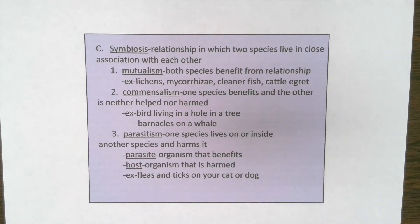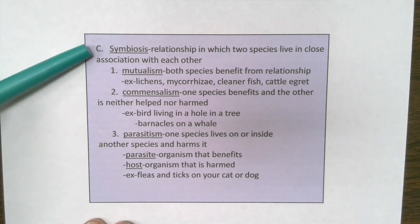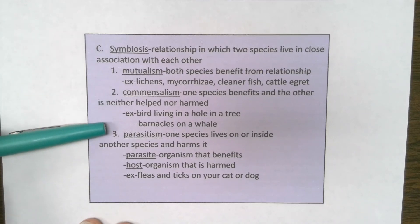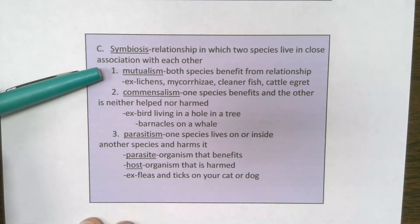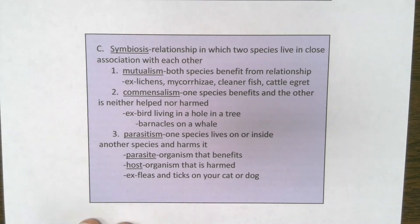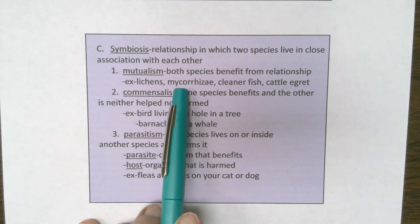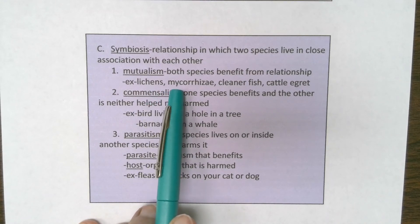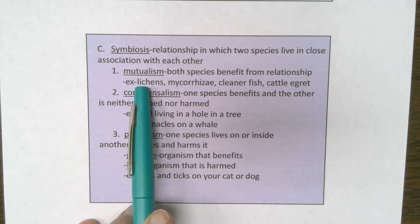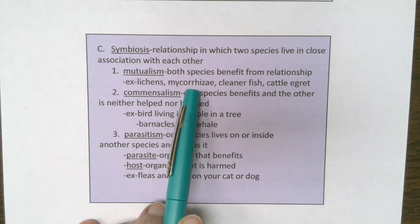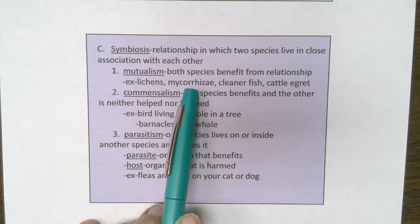The next community interactions: we've got competition, predation, and then symbiosis. Symbiotic relationships are relationships where two species live in close association with each other — a broad definition with three specific types. The first is mutualism, where both species benefit from the relationship. Lichens are an association between fungus and algae; mycorrhizae are an association between fungus and plant roots — in both cases, both partners benefit.